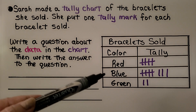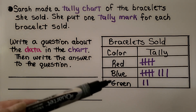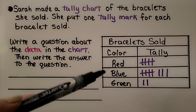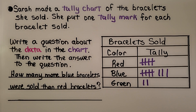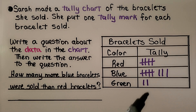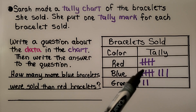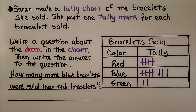How about: how many more blue did she sell than red? Or how many more red did she sell than green? Or which one did she sell the most or least? Let's do: how many more blue bracelets were sold than red bracelets? We see there are 5, 6, 7, 8 blue and 5 red. They both have a group of five, but blue has three extra tally marks. So there were 3 more blue bracelets sold.